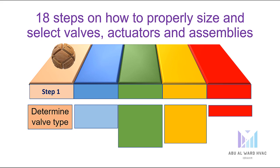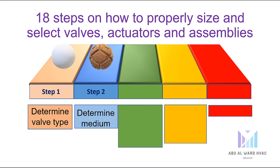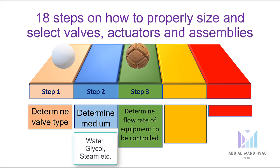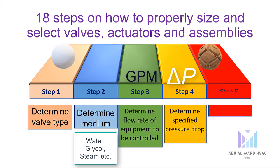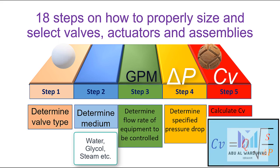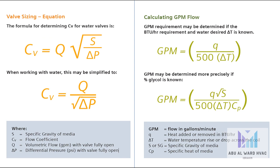Step 1: Determine valve type. Step 2: Determine medium. Step 3: Determine flow rate of equipment to be controlled. Step 4: Determine specified pressure drop. Step 5: Calculate Cv from this formula — Cv equals Q multiplied by the square root of specific gravity S divided by differential pressure ΔP. This formula applies for any medium.